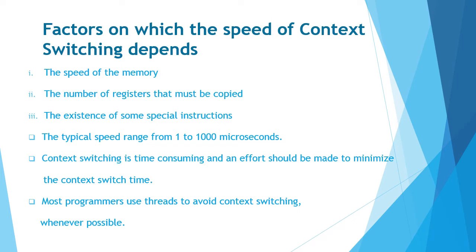There are various factors on which the speed of context switching depends: first, the speed of the memory; second, the number of registers in the PCB that must be copied; and also the existence of special instructions. The typical speed of context switching is from 1 to 1000 microseconds.